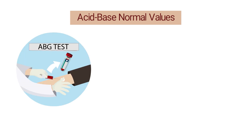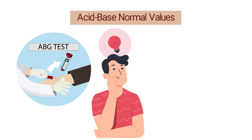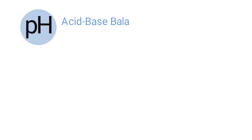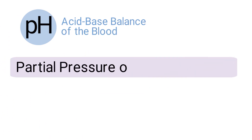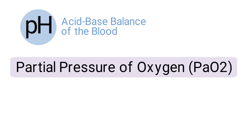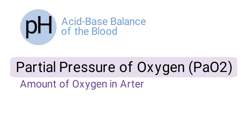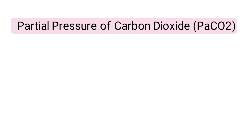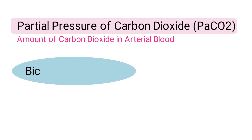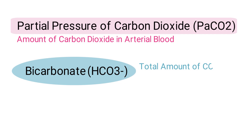To better understand the key elements of an ABG test, it is important to know the definitions of the values being measured. pH refers to the acid-base balance of the blood. The partial pressure of oxygen, or PaO2, refers to the amount of oxygen in arterial blood. The partial pressure of carbon dioxide, or PaCO2, refers to the amount of carbon dioxide in arterial blood.